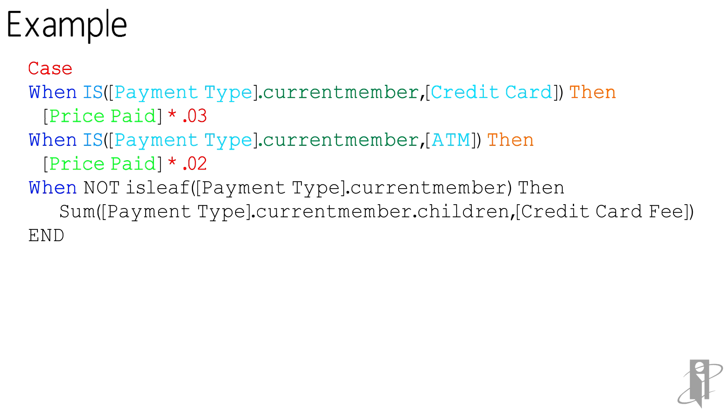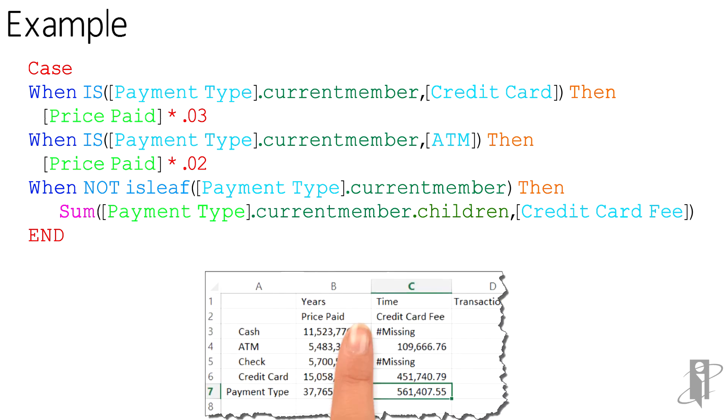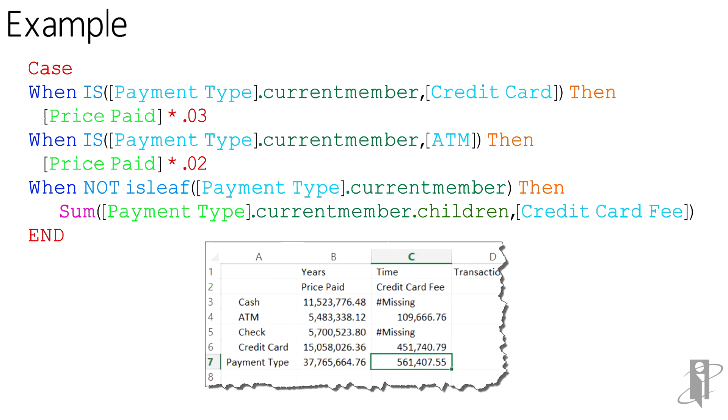The third condition says when we're not a level zero member of payment type, then we're going to sum up all of the children of the credit card fee so we'd get a result at payment type. If you look at the example you'll see that ATM, credit card, and payment type all have amounts in them. So we've made this more robust.